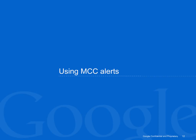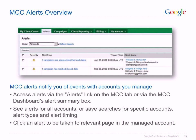Now let's take a look at MCC alerts. MCC alerts notify you of important events, such as payment, creative, or budget issues, that may affect the accounts you manage. You can access alerts by clicking on the Alerts link under your My Client Center tab or by clicking on the Alerts Summary box on your MCC dashboard. By default, you'll see all new alerts across all accounts linked to your MCC. But in a few short steps, you can search for specific types of alerts and save those searches for later use.